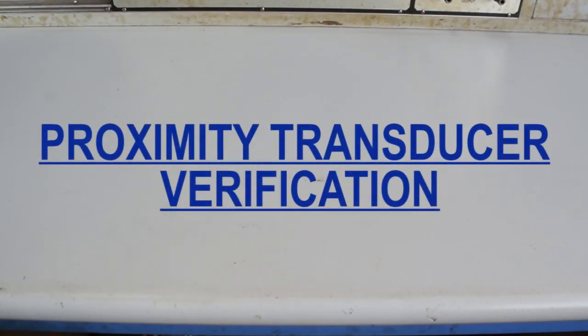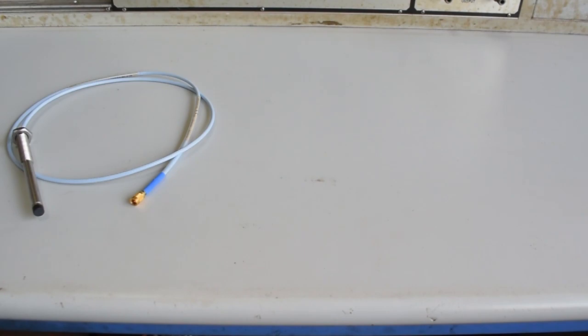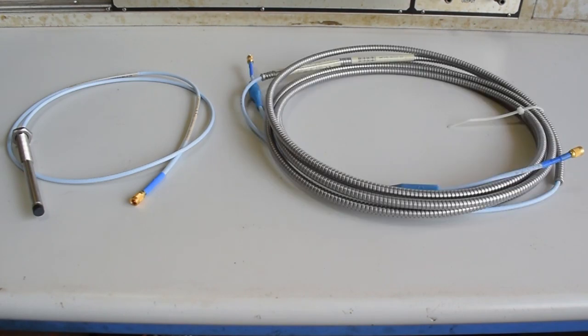The proximity transducer basically comprises of three components: the proximity probe, extension cable, and the proximator.